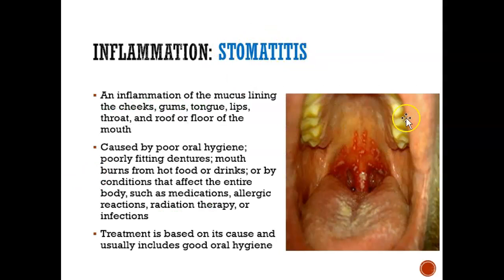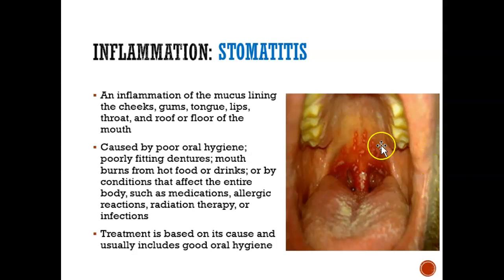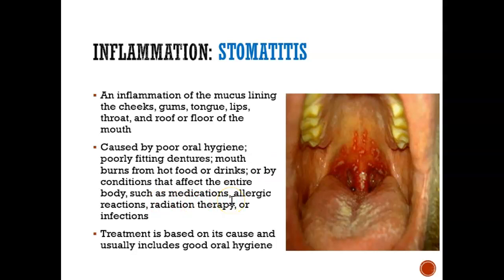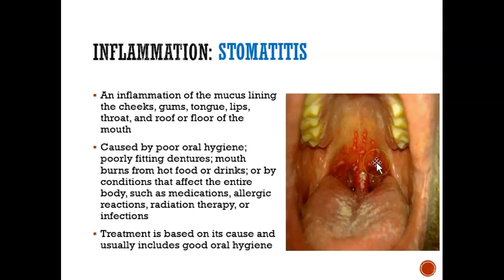Stomatitis is inflammation that can affect the roof or floor of the mouth. What causes it? Many conditions: poor oral hygiene, a denture that isn't fitting properly, hot food or hot drinks that could burn that area, an allergic reaction, or radiation therapy. Treatment involves figuring out what causes it and then preventing it. If it's a poorly fitted denture, we fix the denture. If it's hot food or drink, we avoid that.